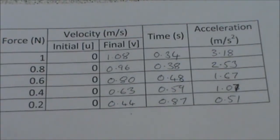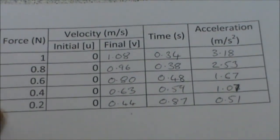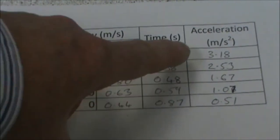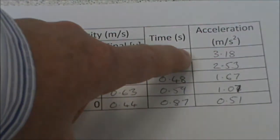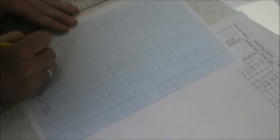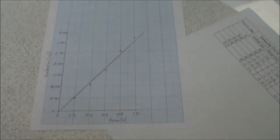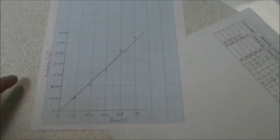And now you can check your results against mine. Now we have our results we can plot our graph. Remember we're going to have force on the x axis from 0 to 1. And acceleration on the y axis. And we'll go up to 3.5. So now we draw the graph. And now we can plot the points. And now we can add our line of best fit. So there we have our graph of force against acceleration.